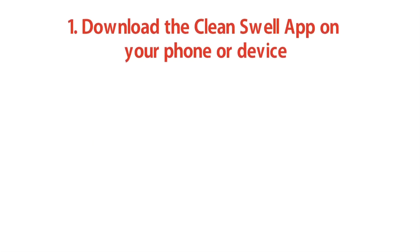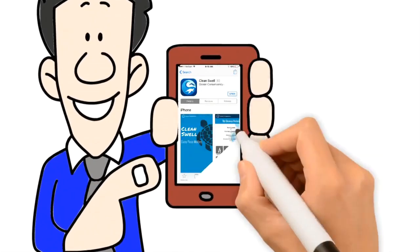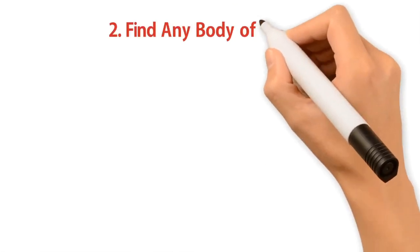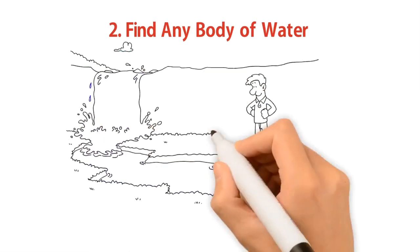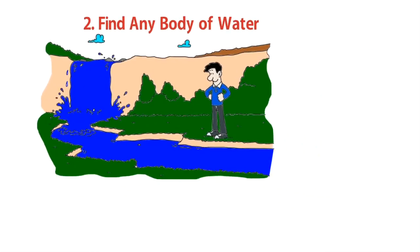Here's how. First, download the Clean Swell app on your phone or device. Then, find any body of water. Ponds, small streams, lakes, rivers, ditches, and gullies all count.